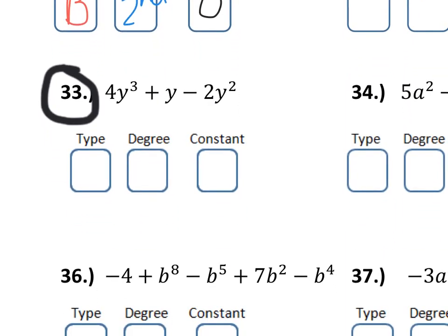So, let's look at 33. This time, we have 1, 2, 3 terms. So, that is a trinomial.